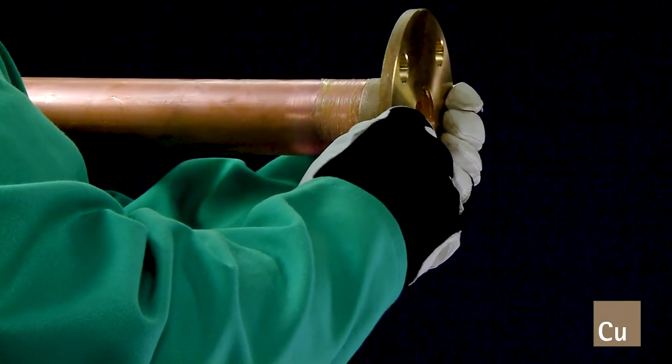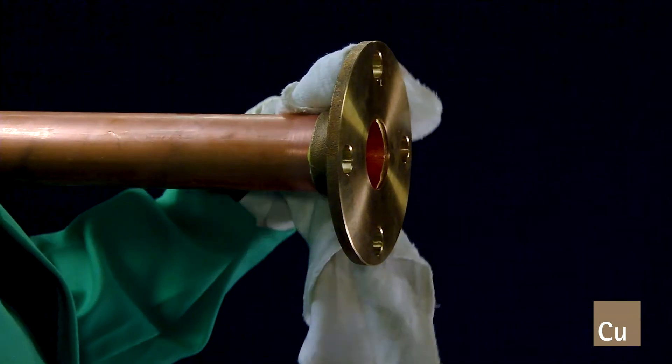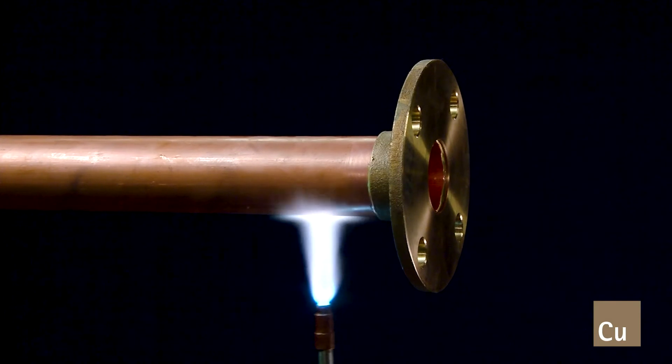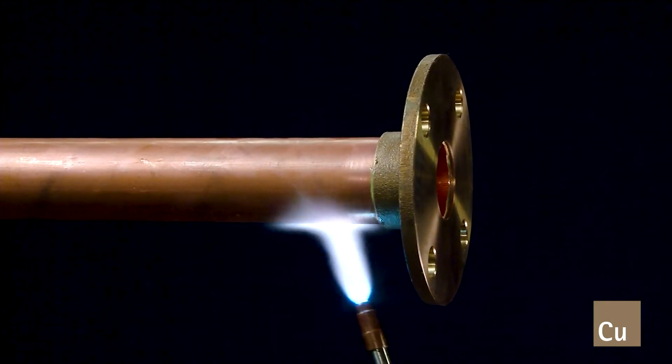Assemble them together. Remove any excess flux from the outside of the tube. Begin preheating the bottom two-thirds of the tube and the bottom two-thirds of the flange socket.